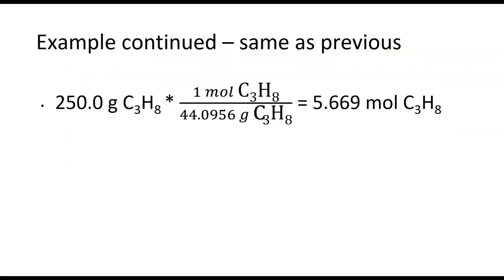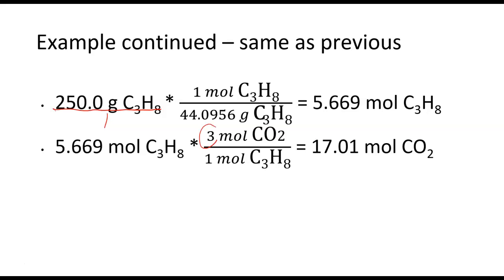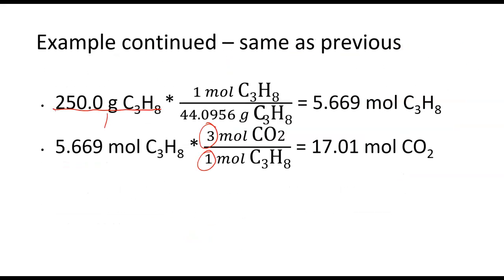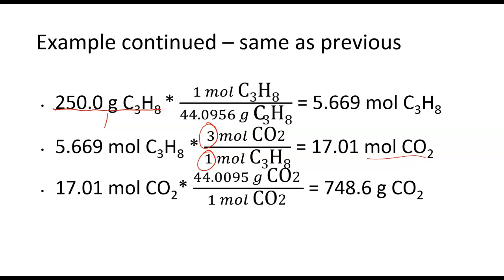We have 250.0 grams of C3H8. I'll put that over one. I can use my molar mass of C3H8 to go from grams to moles. Once I know my moles of C3H8, I can then convert to moles CO2 using the balanced equation. So I have three moles CO2 to every one mole C3H8. And then finally, I can convert from my moles of CO2 to grams of CO2 using the molar mass. So I get that I could possibly make 748.6 grams of CO2 if all of this C3H8 reacts completely.